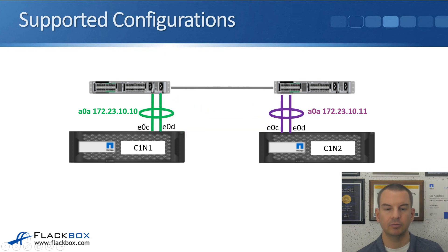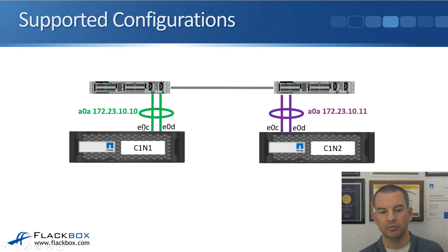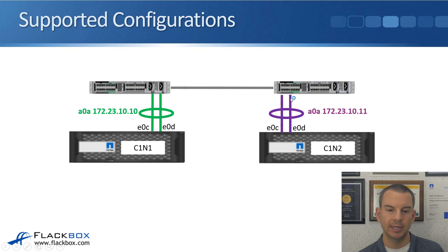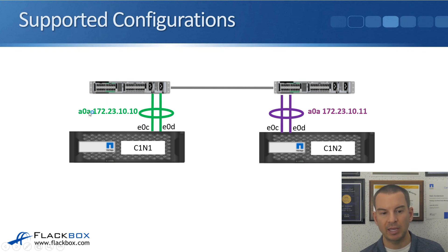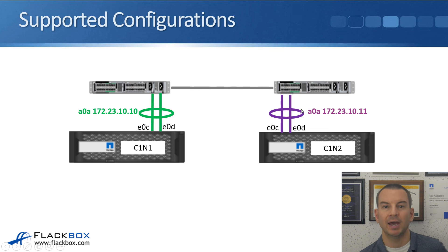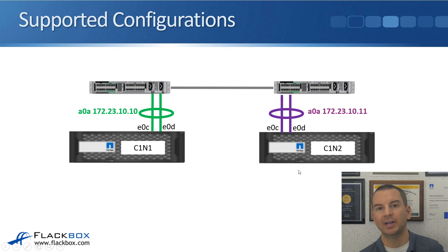Alternatively, if switches don't support a shared port channel downstream, you could bundle E0C and E0D on node 1 into one interface group connecting to switch 1, and E0C and E0D into a separate interface group connecting to switch 2. At first glance the switch looks like a single point of failure, but failover groups can still provide redundancy — if A0A on node 1 goes down, it can fail over to the interface group on node 2. Both configurations are valid on ONTAP systems.